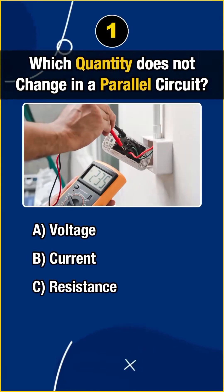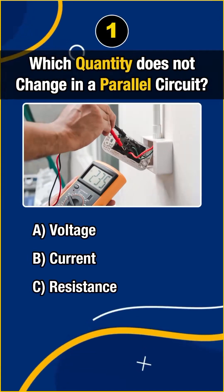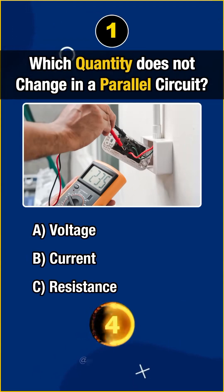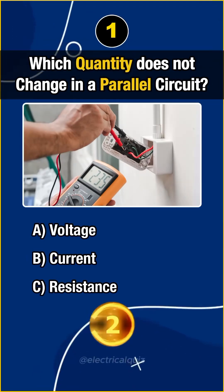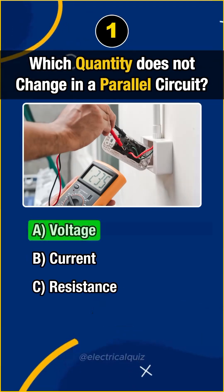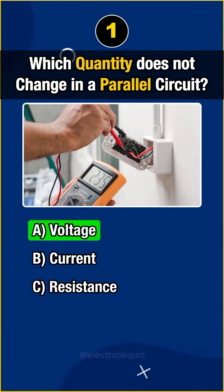First question: Which quantity does not change in a parallel circuit? Answer A — Voltage.